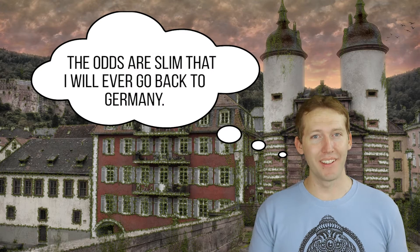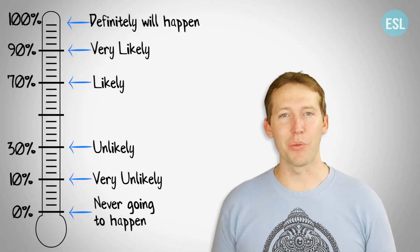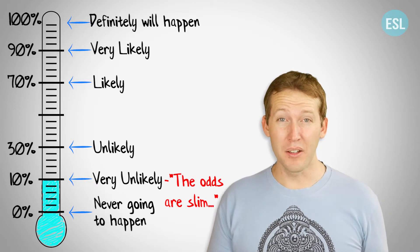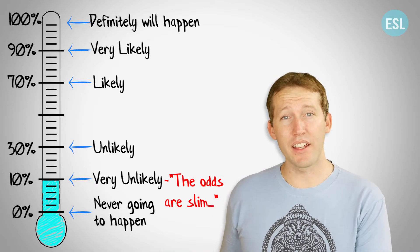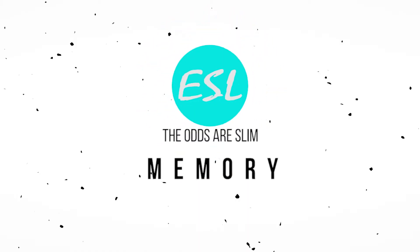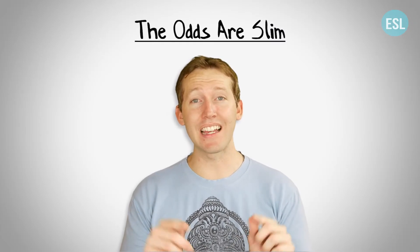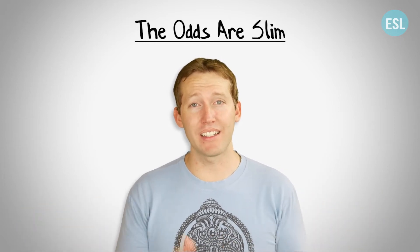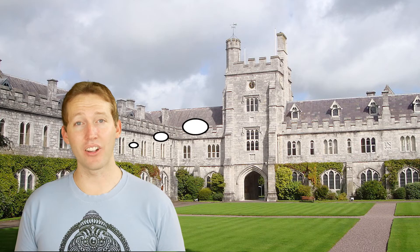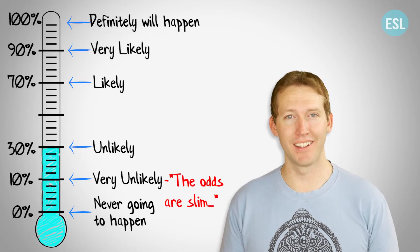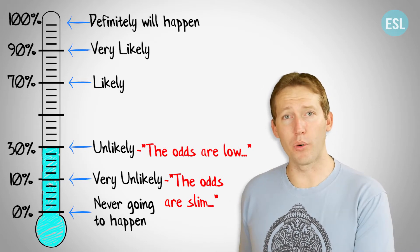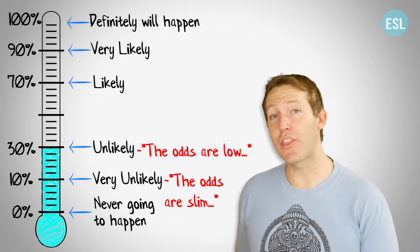The odds are slim that I will ever go back to Germany. In other words, it is very unlikely that I will go back to Germany — it's possible, but very unlikely. There is a very slim chance. And you can remember this because slim people have very slim waists — slim waist, slim chance. The odds are low that I'll get a PhD, which means it is unlikely that I'll get a PhD. So as you can see, if the odds are low, your chances are not good. But they could be less.